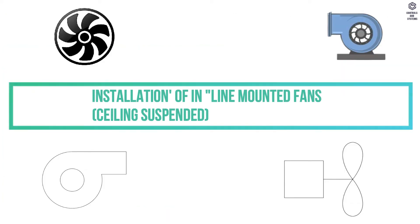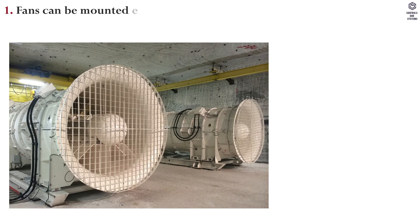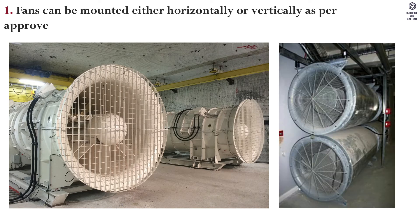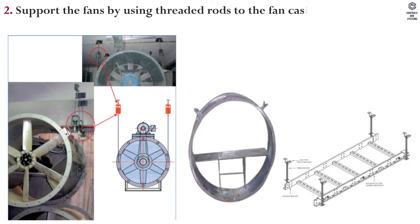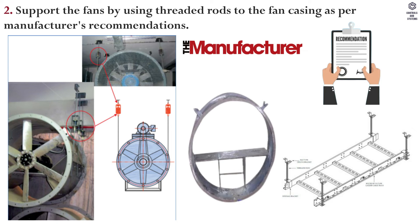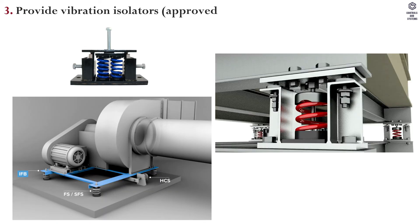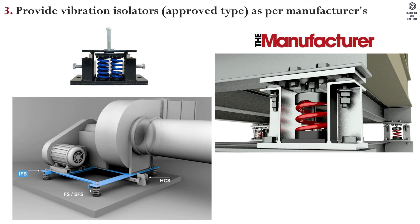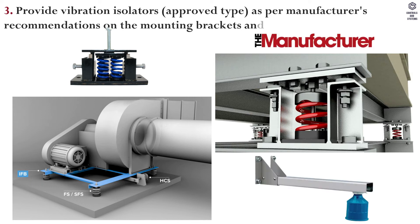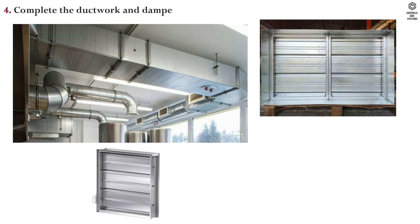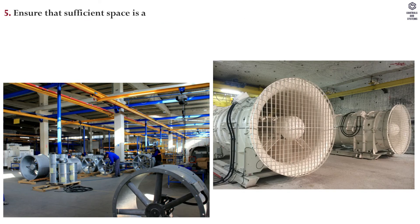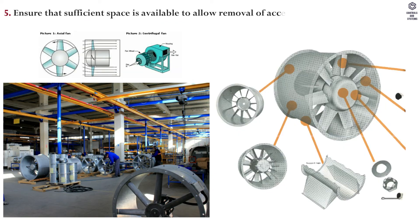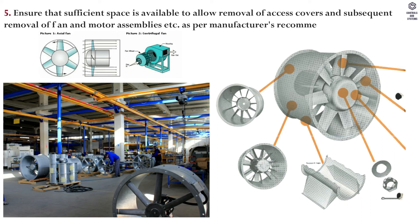Installation of inline mounted fans: 1. Fans can be mounted either horizontally or vertically as per approved shop drawing. 2. Support the fans by using threaded rods to the fan casing as per manufacturer's recommendations. 3. Provide vibration isolators of approved type as per manufacturer's recommendations on the mounting brackets. 4. Complete the ductwork and damper connection as per approved shop drawing. 5. Ensure that sufficient space is available to allow removal of access covers and subsequent removal of fan motor assemblies, as per manufacturer's recommendations.